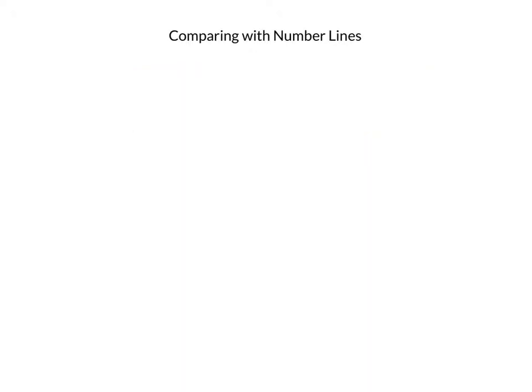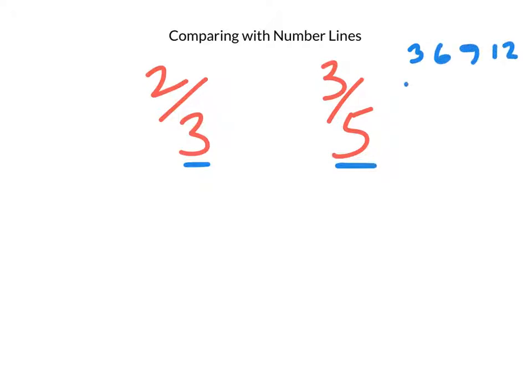Let's say that we want to compare the fraction 2/3 and 3/5. Very similar to when we did strips, we want to find out what's a number that both our denominators, 3 and 5, go into. So I'm going to count by 3s: 3, 6, 9, 12, 15, 18, 21.